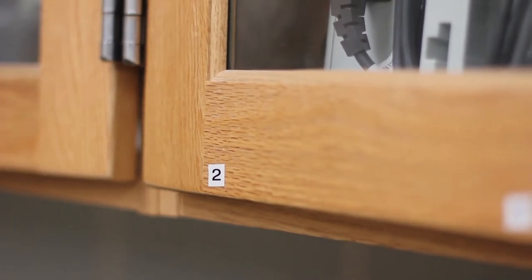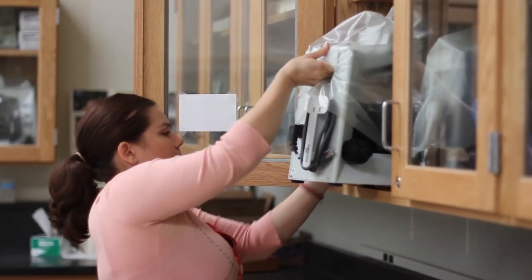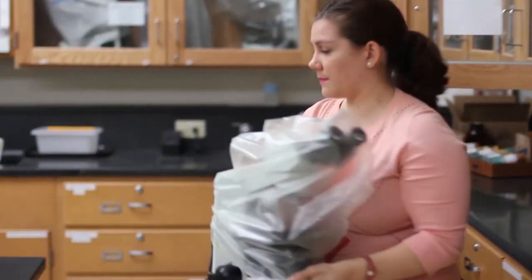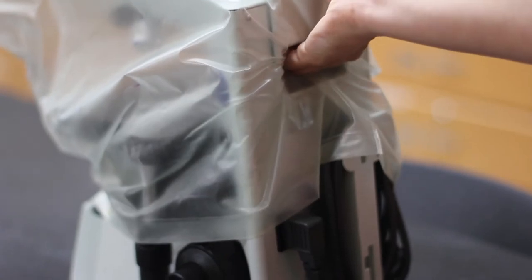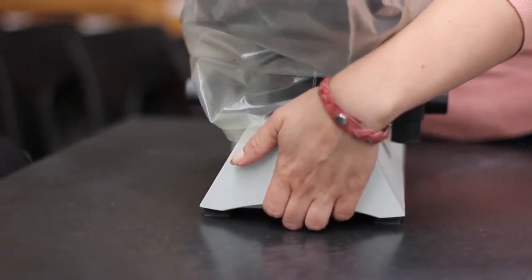The first step to using the microscope is to remove it from its storage cabinet and bring it to your work area. When carrying a microscope, always use two hands. One hand firmly grasping the handle in the back of the arm or frame of the microscope and the other hand supporting the base.